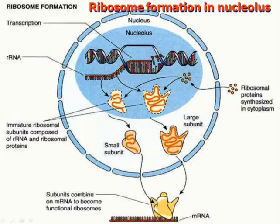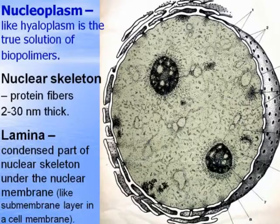Chains of RNA fibers become condensed and connect with ribosomal proteins synthesized in the cytoplasm. Ribosomal subunits form, then are transported through the nuclear pores to the cytoplasm, where they combine together and form ribosomes.